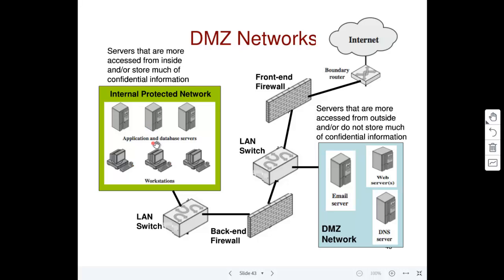So what you could do is put all your public-facing servers in one network and expose them to the outside world. A packet coming from the internet passes through what's called a front-end firewall, and after passing through the front-end firewall it could access the DMZ network. You really have this firewall to protect the servers, but they are exposed to the outside internet more openly.